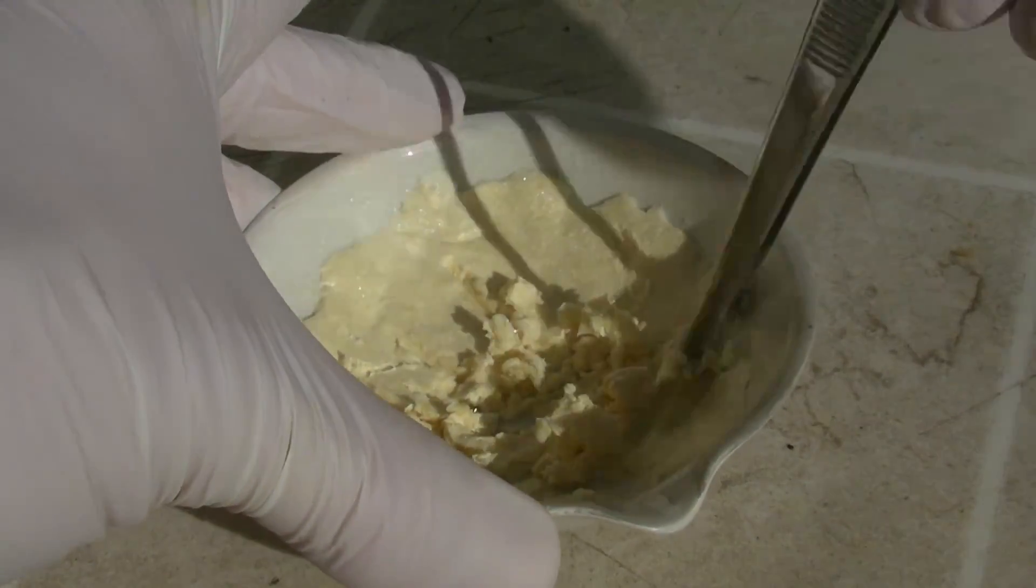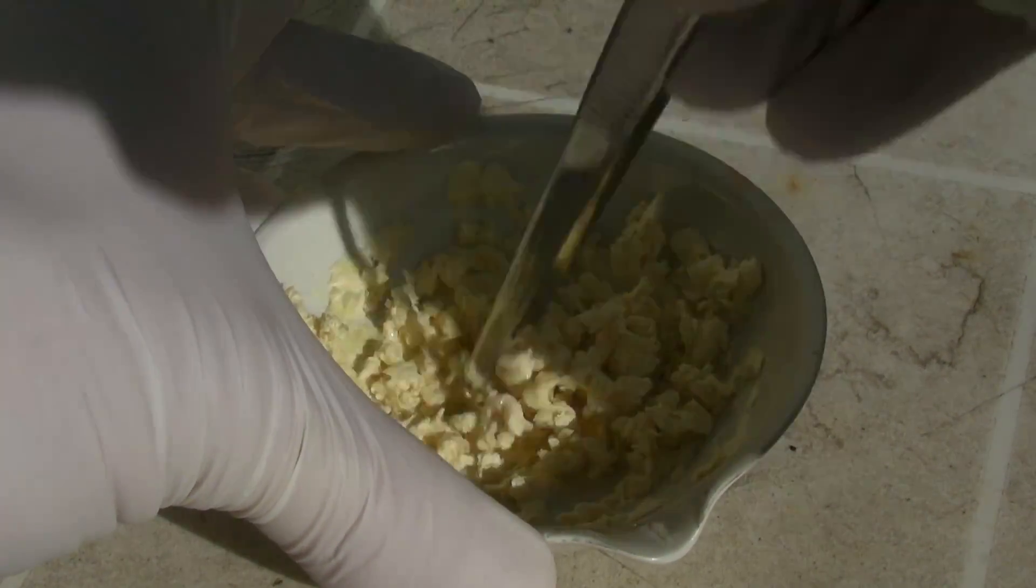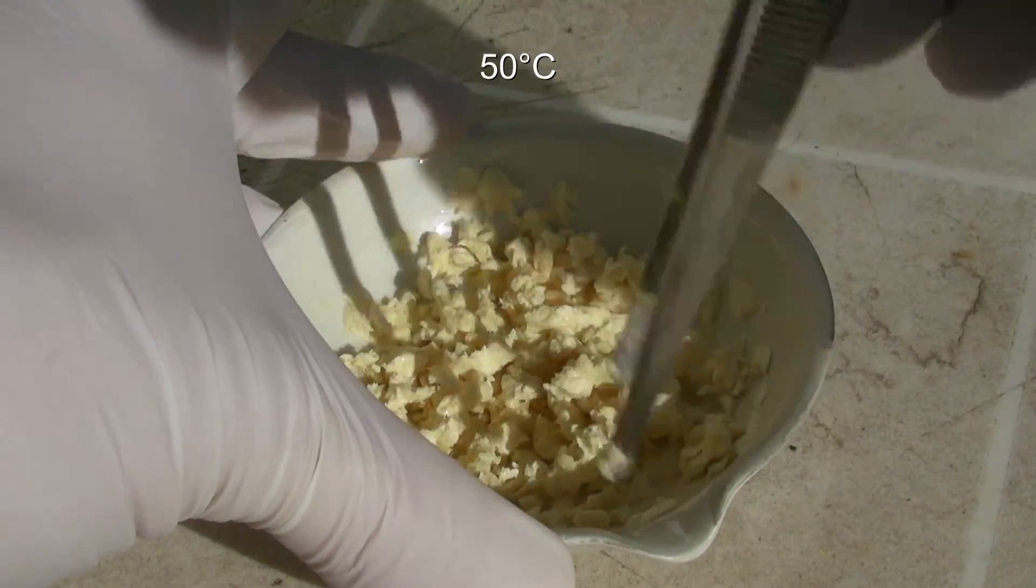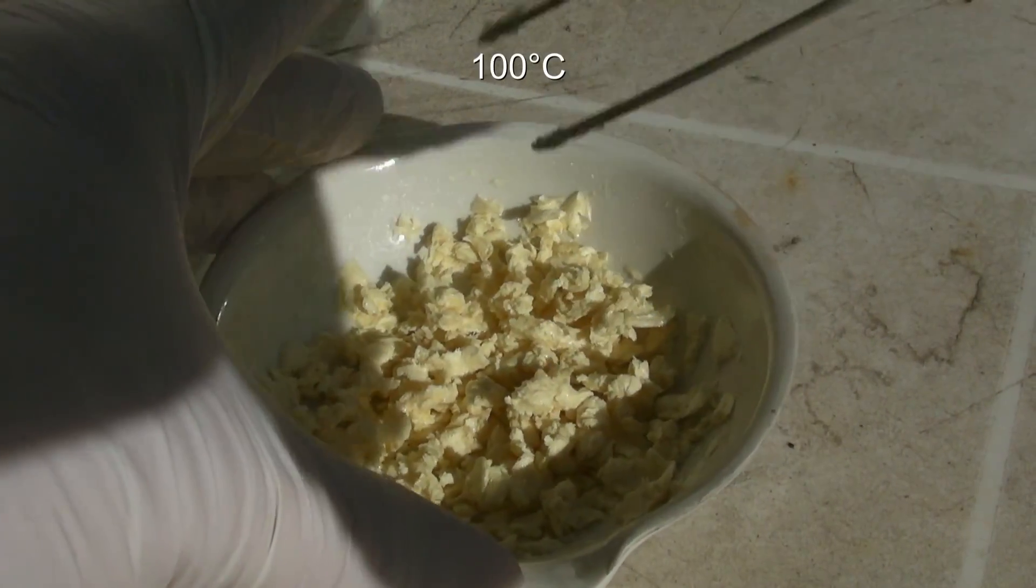Then the dinitro salicylic acid was loosened again, first dried at around 50 degrees C on the hot plate and at the end at around 100 degrees C.